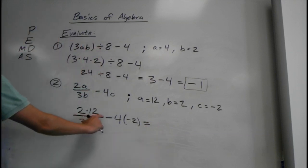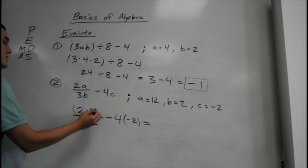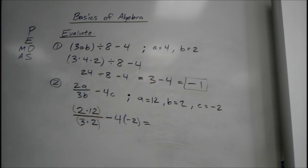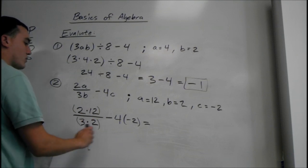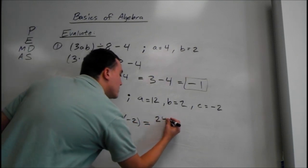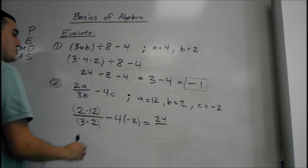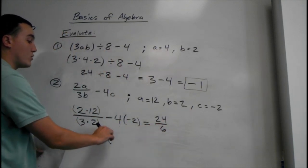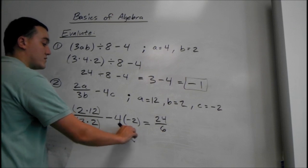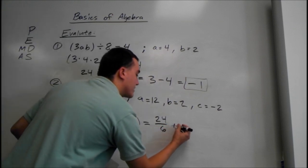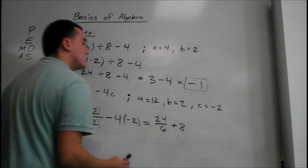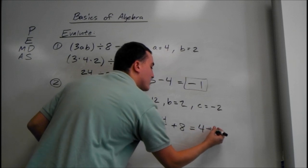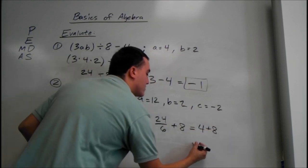Whenever we have a division bar, that's a form of parentheses — they want us to do everything on the top first, and everything on the bottom first. So we have 12 times 2 is 24, over 3 times 2 is 6. And we have minus 4 times negative 2 — two negatives make a positive, so really we're just adding 8. 24 divided by 6 is 4, plus 8. Final answer is 12.